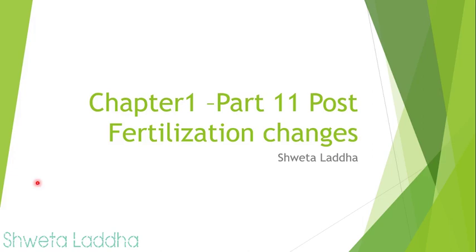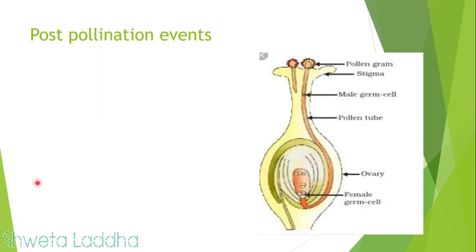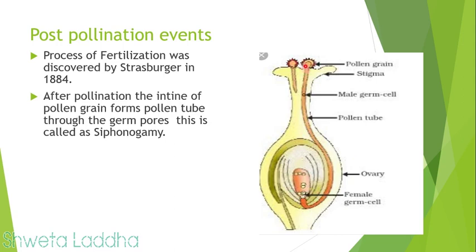Let us start with part 11 of chapter 1: post-fertilization changes, that is post-pollination events. When the pollen grain falls on the stigma of the pistil, it germinates. This process of fertilization was discovered by Strasburger in 1884. After pollination, the exine of the pollen grain forms a pollen tube because of endosmosis. This process of formation of a pollen tube for fertilization is called siphonogamy.